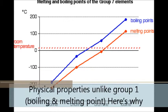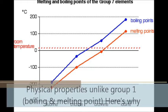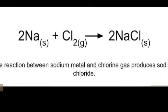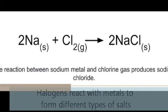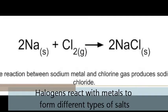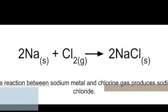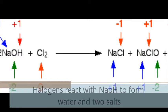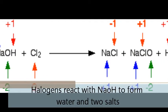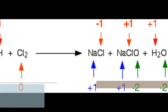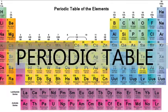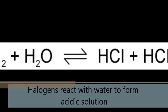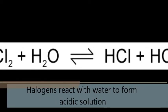The physical properties of halogens. Group 17 — halogens react with metals to form different types of salts. Halogens react with alkalis to form water and salts. Halogens react with water to form acidic solution.